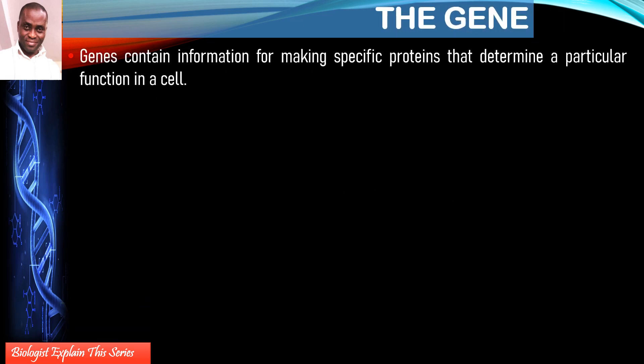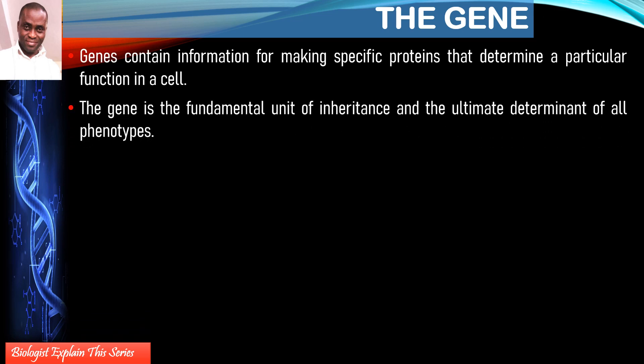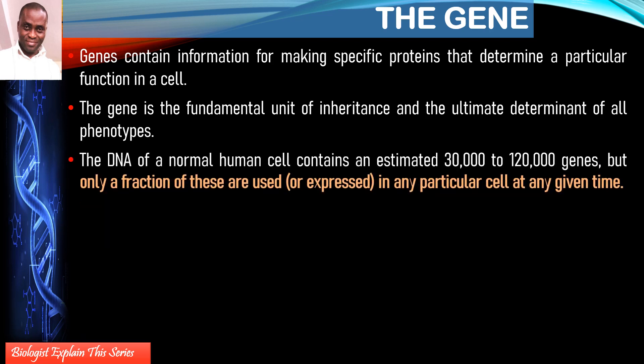Genes contain information for particular functions of a cell. The gene is the fundamental unit of inheritance, and ultimately genes determine the phenotype. Phenotype refers to the observable traits you can observe microscopically or by simply looking at a person. Everything that describes or identifies an individual is their phenotype, and it is all determined by their genes.